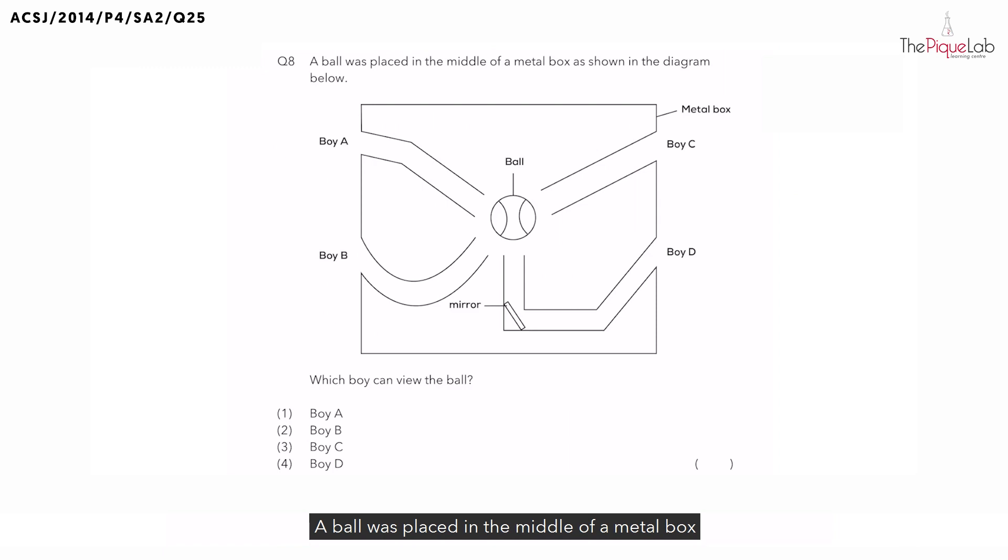A ball was placed in the middle of a metal box as shown in the diagram and we have four different boys A, B, C and D standing at different positions. Now the question then asks, which boy is able to see the ball?